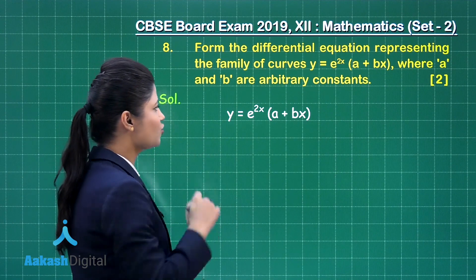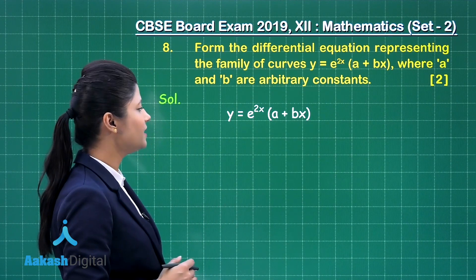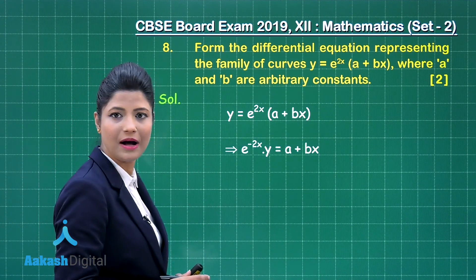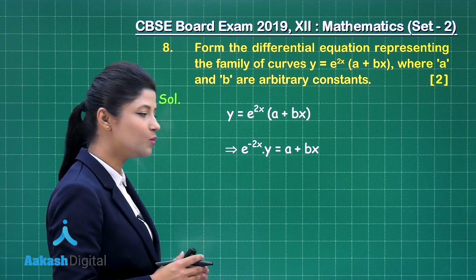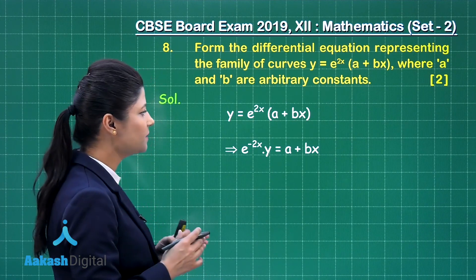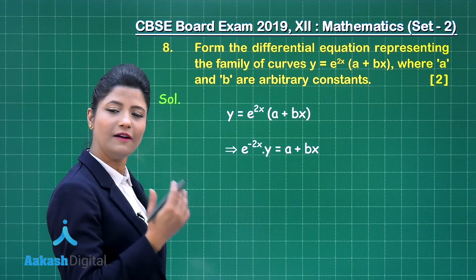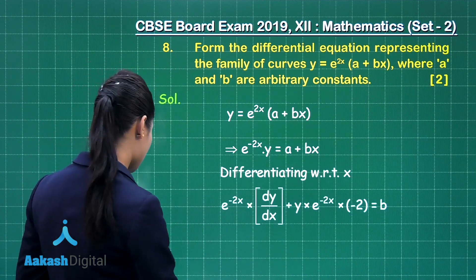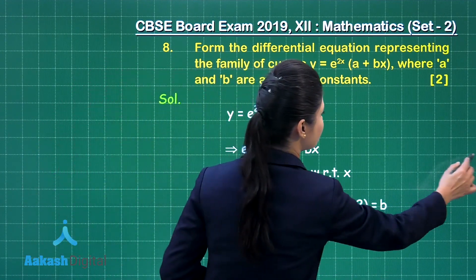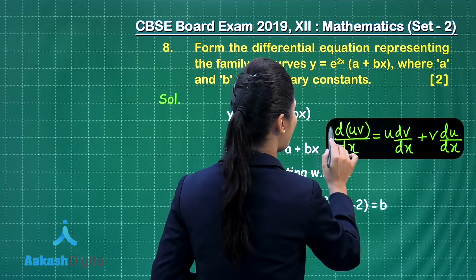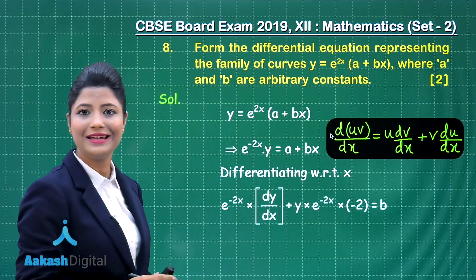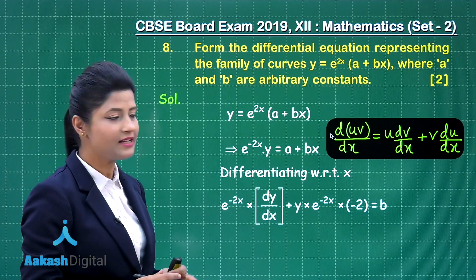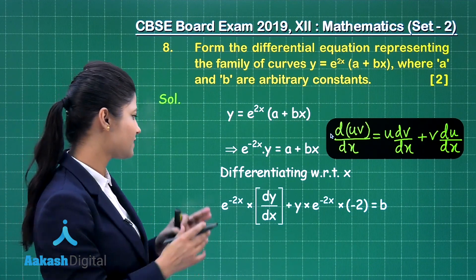If you bring e^(2x) to the left hand side, you will obtain e^(-2x) * y = a + bx. Now, if I differentiate both sides with respect to x, I am using the product rule: d(uv)/dx = u * dv/dx + v * du/dx, considering the two functions u = e^(-2x) and v = y.